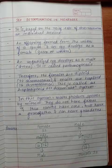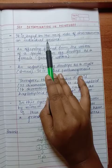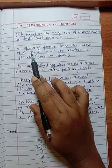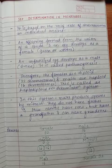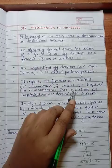Sex determination in honeybee is based on the number of sets of chromosomes an individual receives. An offspring formed from the union of a sperm and an egg develops as a female, that is the queen or the worker. An unfertilized egg develops as the male drone. This is called parthenogenesis. Therefore, females are diploid with 32 chromosomes and males are haploid with 16 chromosomes. This is called the haploid sex determination system.